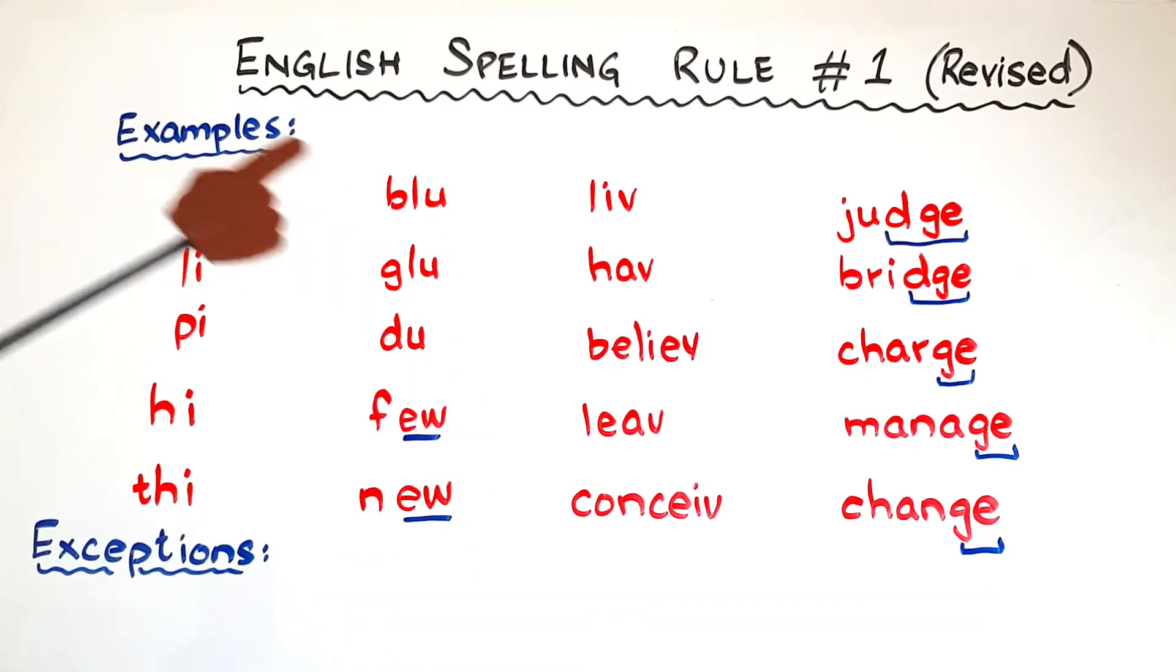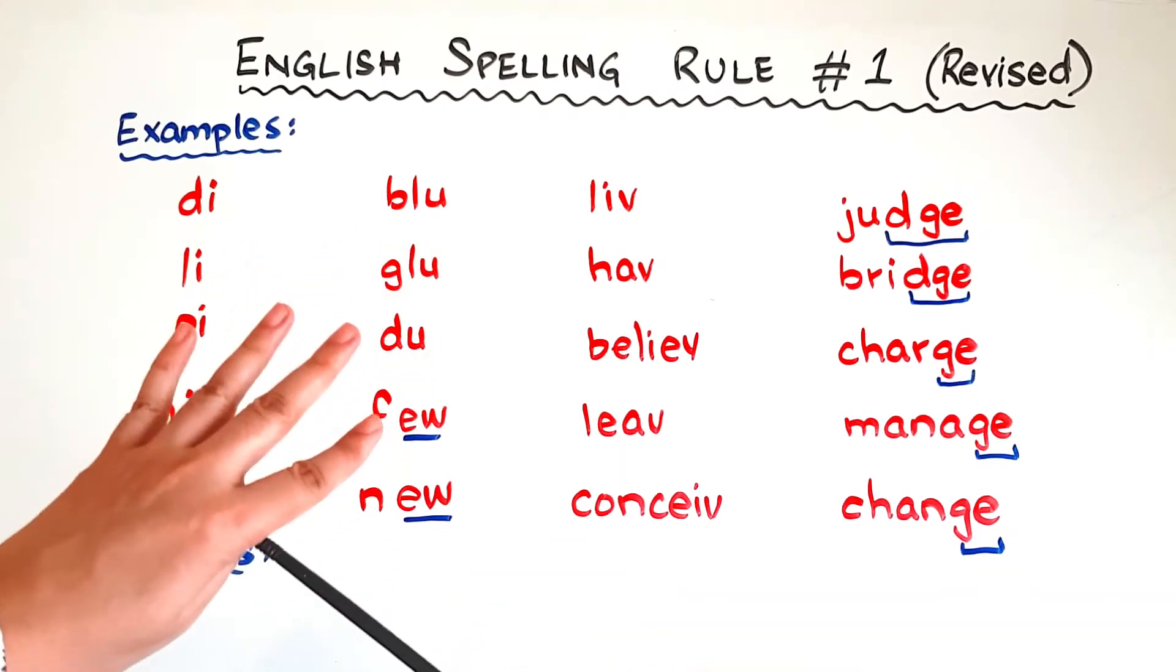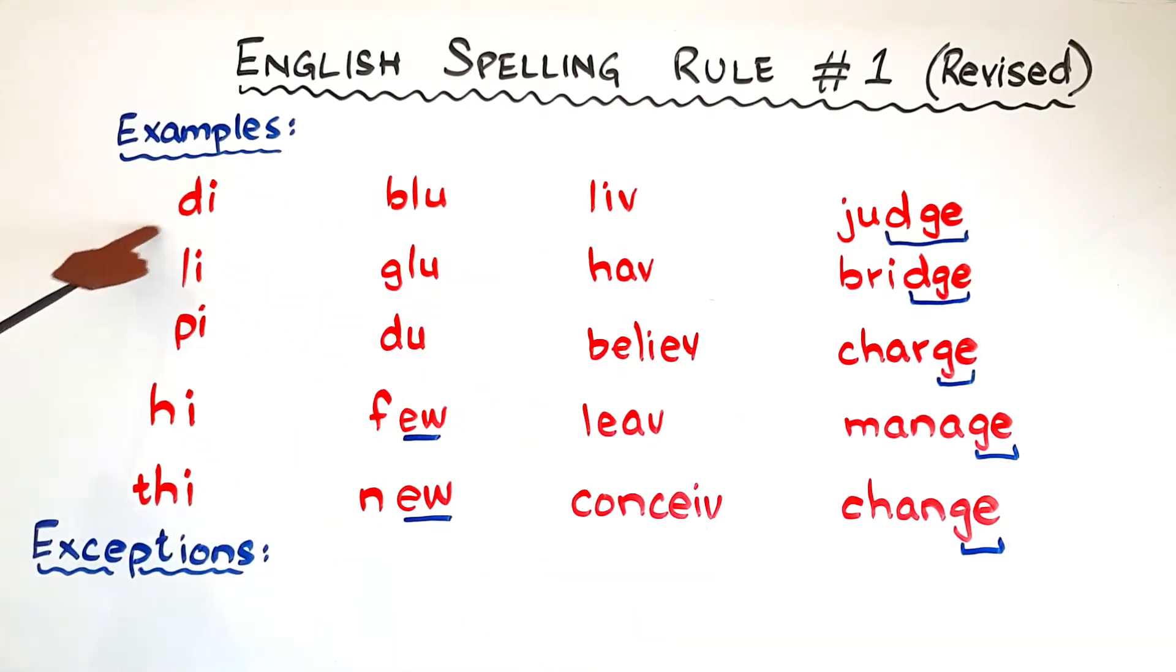You will see that none of them will end at I, U, V, and J. If the word is die, the pronunciation is fine, but we do not write die like this. What do we do? We put a silent final E at the end of the word because English words do not end in I.